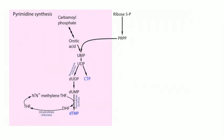After generating carbamoyl phosphate, several steps generate orotic acid. From orotic acid you generate UMP (uridine monophosphate) — this step requires PRPP (phosphoribosyl pyrophosphate), which provides the sugar and phosphate for both pyrimidine and purine nucleotides. Then you add a phosphate to convert UMP to UDP, which can form either CTP or deoxy-UDP via the enzyme ribonucleotide reductase.